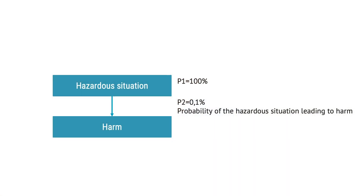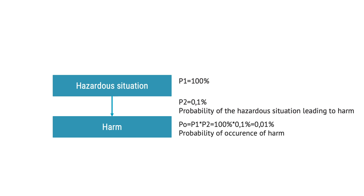Let's take a look at the math related to this. The probability of occurrence of the hazardous situation is P1 — in this case 100%, because there are bacteria and viruses everywhere. And if we agree that you will get an infection one in a thousand times, there is another probability: P2. P2 is the likelihood that the hazardous situation will lead to harm. This means that P0 can be calculated by multiplying P1 and P2, which means there is a 0.1% probability of experiencing an infection in conjunction with a needle stick. So now you are acquainted with P1, P2, and P0.